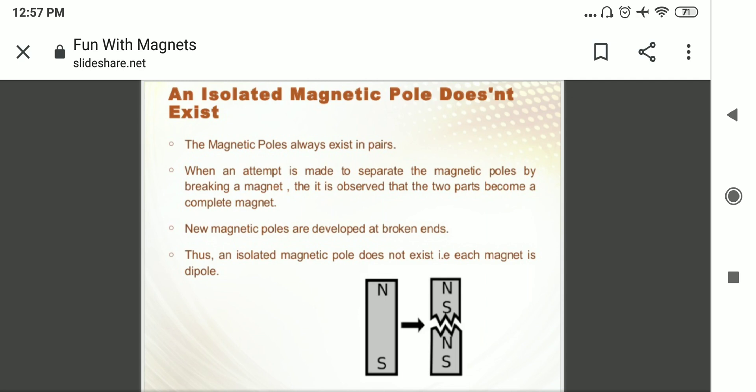So whenever we break the magnet, the poles cannot be separated. It will have two poles, one is north pole and other is the south pole.